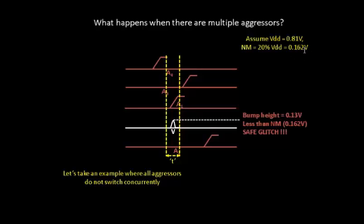As a result of that, this also falls into the category of safe glitch. It looks potentially like a very high glitch, but it still falls into the category of safe glitch because the bump height is less than the noise margin.